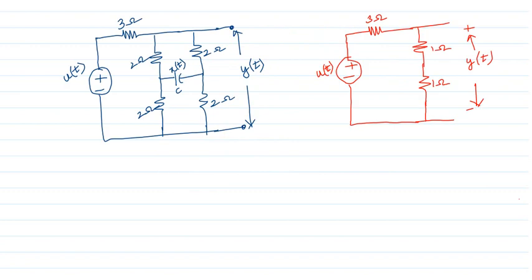Before going into the lecture, I want to look at these two circuits and find what is the relation between them. For both the circuits, input is u(t) and output is y(t). In state space analysis, we make the input as u, output as y, and states as x(t). We have already discussed these things in part 1 and part 2 of the state space analysis lecture.